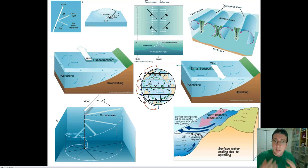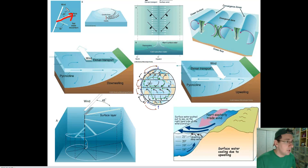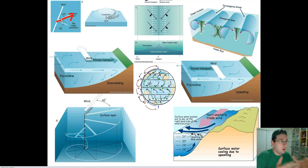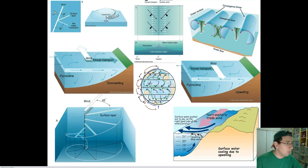To actually understand the Ekman transport system, you have to put the Coriolis effect together with the idea that the wind only pushes the surface water. When the wind tries to push the surface water away, it causes the water not to move in the same direction as the wind, but because of the Coriolis effect, the surface water actually moves at an angle — typically a 45-degree angle to the direction of the wind, depending on how strong the winds are. The Coriolis force creates the geostrophic current effect, shifting the water either left or right depending on your hemisphere.